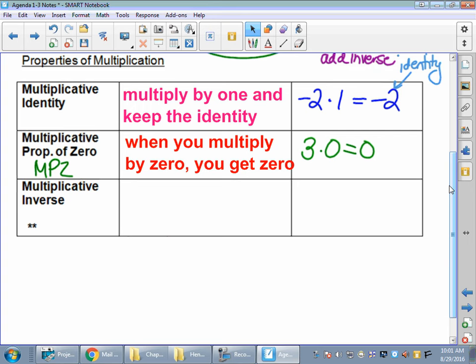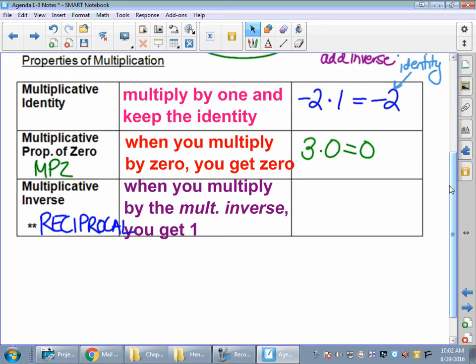Multiplicative inverse. You may have also heard the term reciprocal. I tend to use reciprocal more frequently than multiplicative inverse. But multiplicative inverse or reciprocal is when you multiply by the multiplicative inverse, you get 1. Remember, additive inverse, we got 0. Multiplicative inverse, we get 1. So if I've got 3 fifths times something and I want to get an answer of 1, what would that something be? 5 thirds, right? Because then if I did the math, I'd have 15 over 15, which gives me a positive 1.